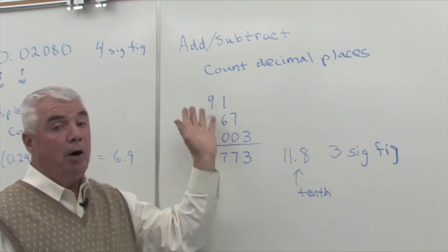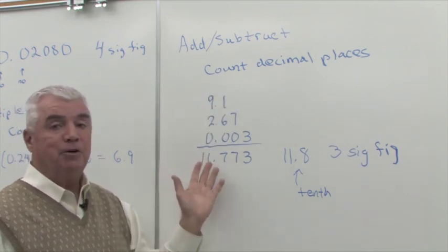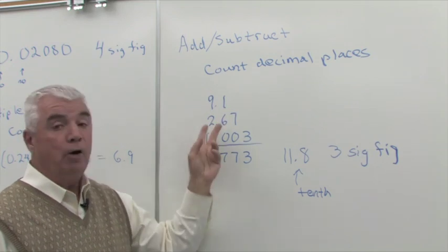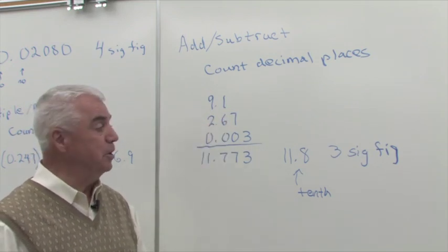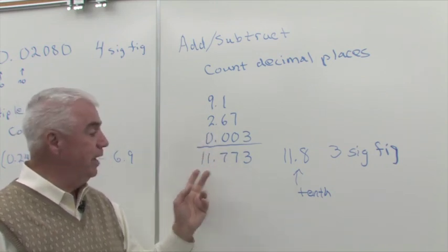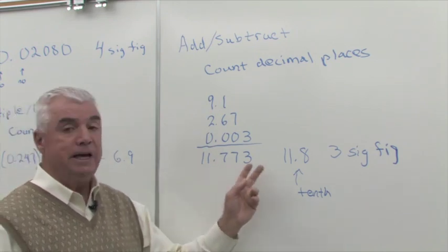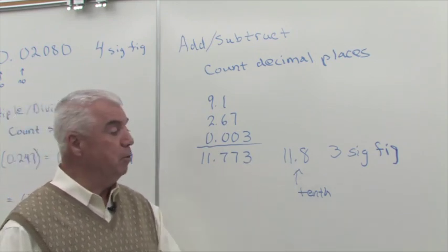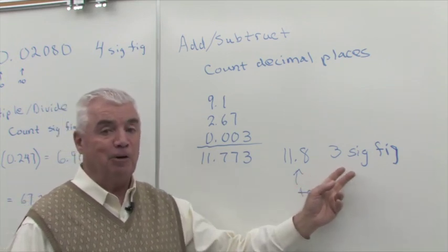And I don't know how many significant figures are going to be in the answer. I actually need to work the problem, round to the tenth, and then I can count the number of significant figures that are there. When we add these three numbers up, we get 11.773. If I round to the tenth, it becomes 11.8. That's the correct answer. And it has three significant figures.